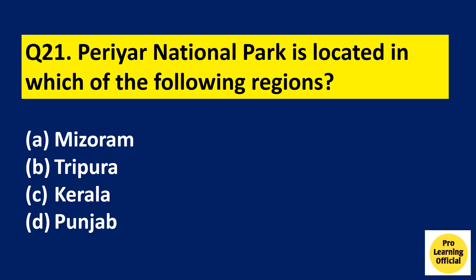Question number 21: Periyar National Park is located in which of the following regions? Option A: Mizoram. Option B: Tripura. Option C: Kerala. Option D: Punjab. The right answer is Option C, Kerala. Periyar National Park is situated in Kerala.